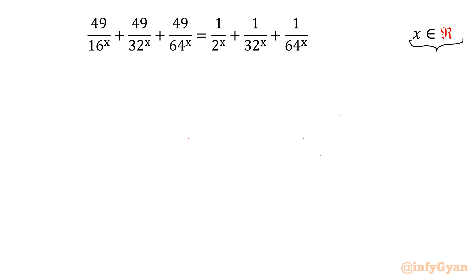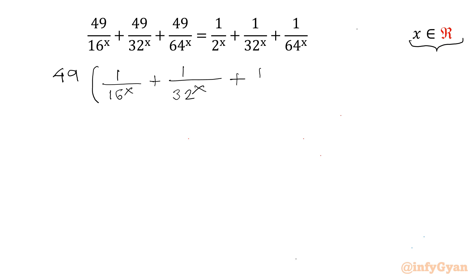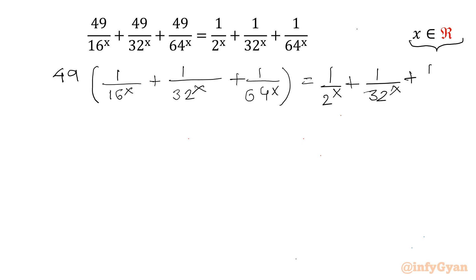Let us get started by taking 49 common from the LHS. So I can write 49 times [(1/16)^x + (1/32)^x + (1/64)^x] equal to (1/2)^x + (1/32)^x + (1/64)^x.